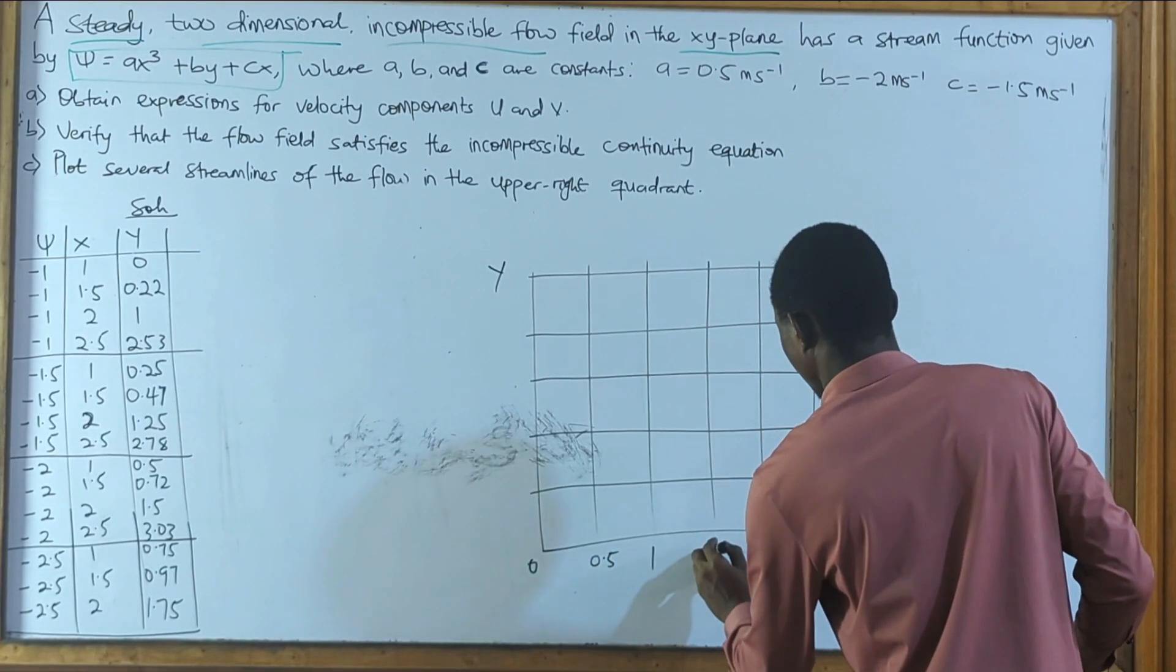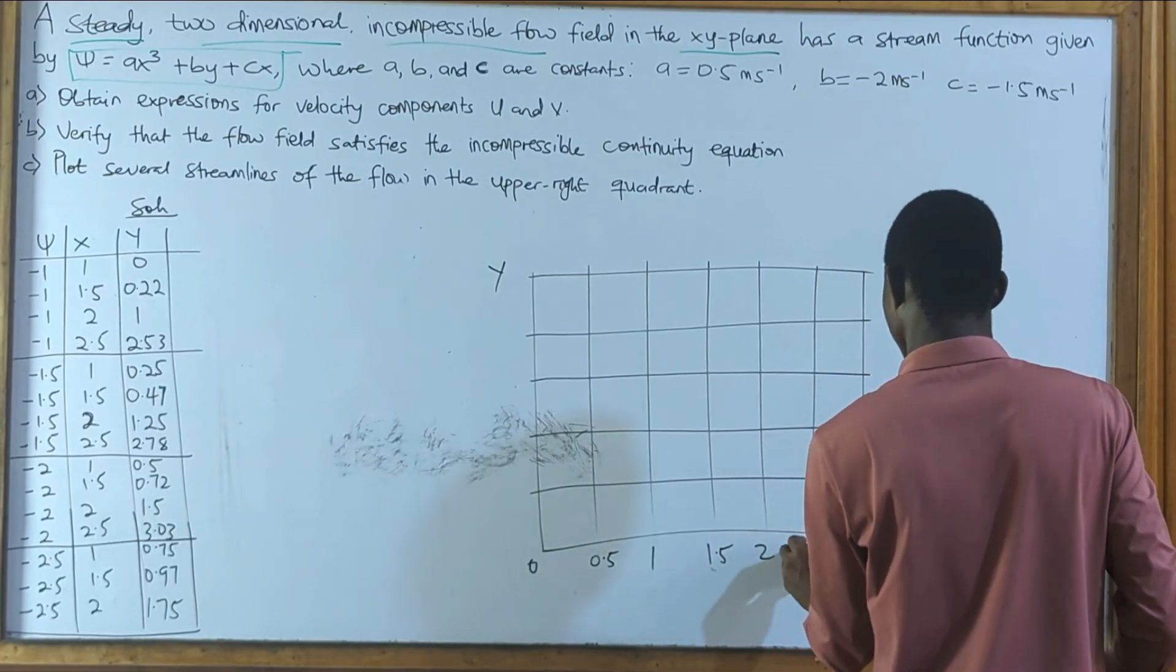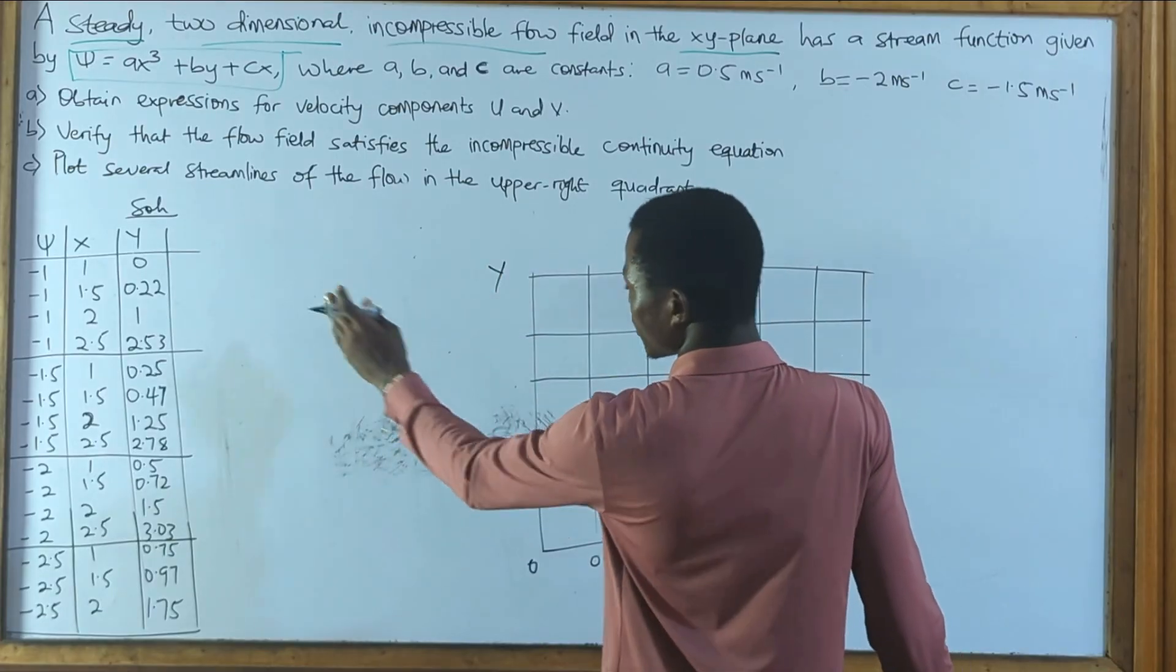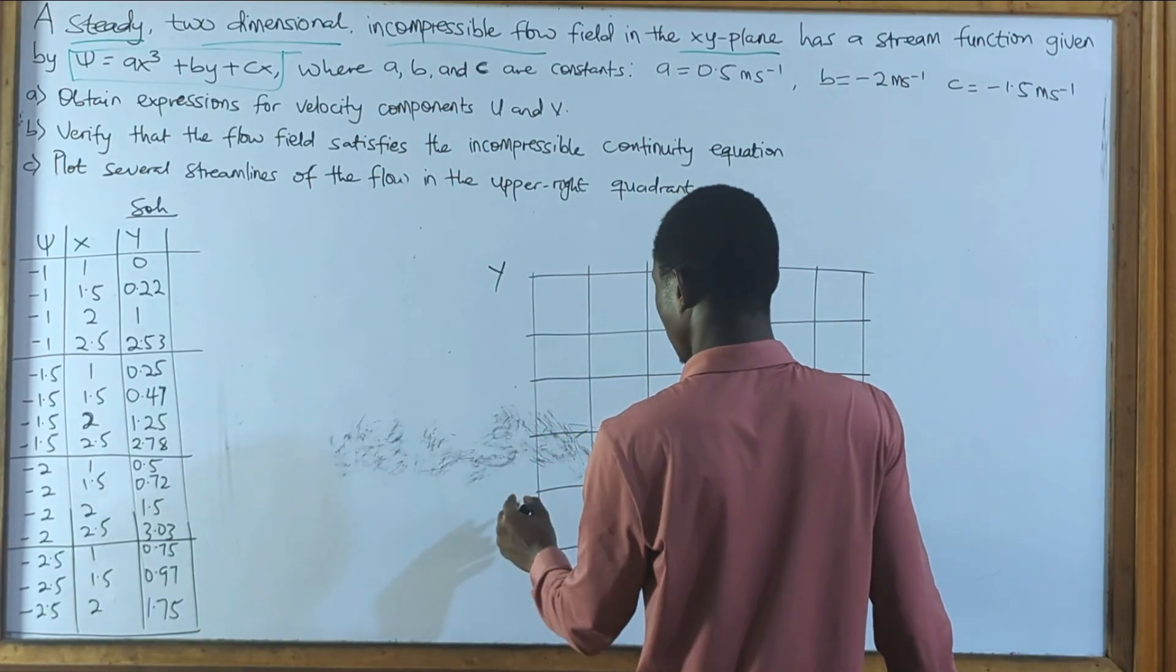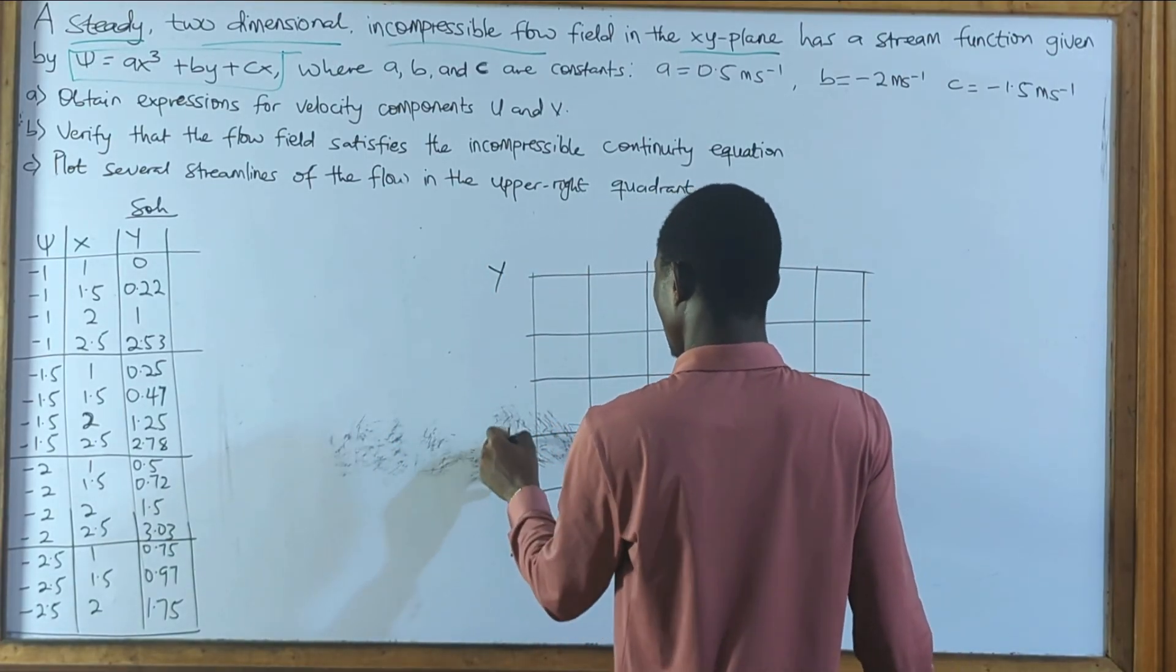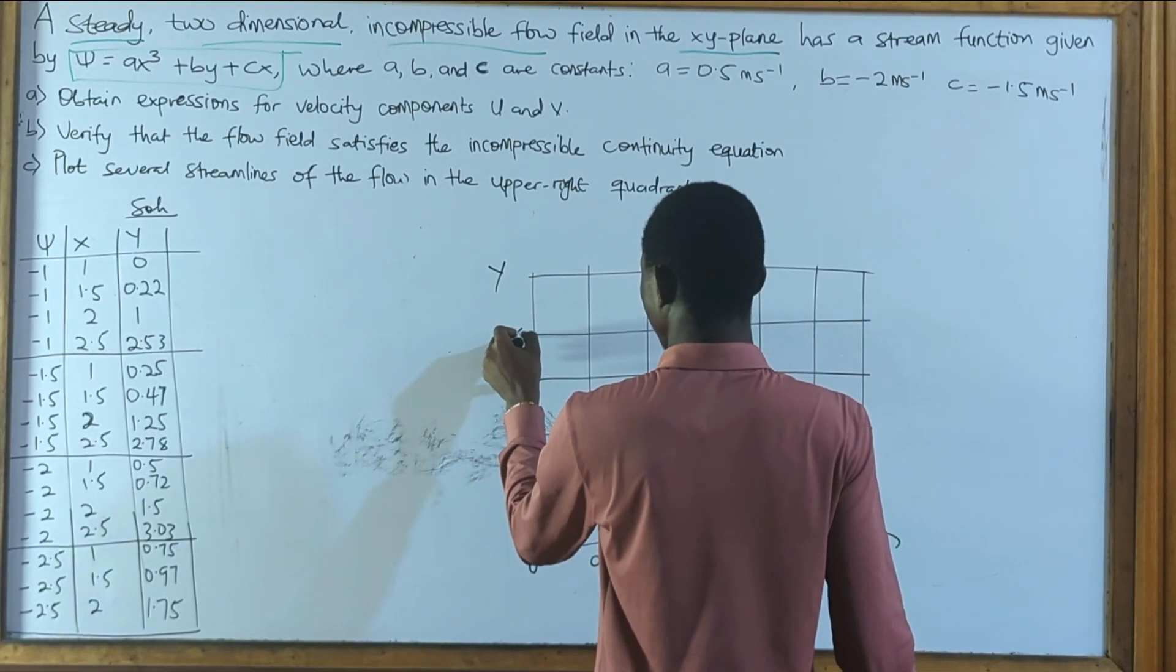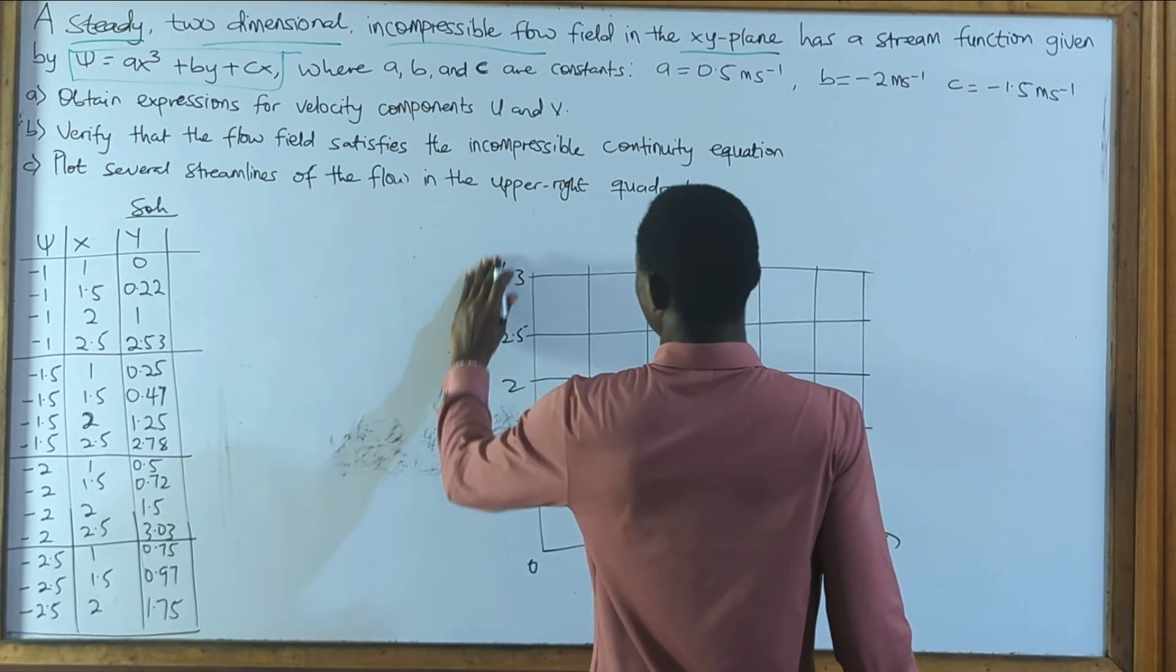And if I look at this here, I can see the highest so far is 3. So I can start from 0.5: 1, 1.5, 2, and 2.5. And for my y, I can also start with that same scale: 0.5, 1, 1.5, 2, 2.5, and 3.